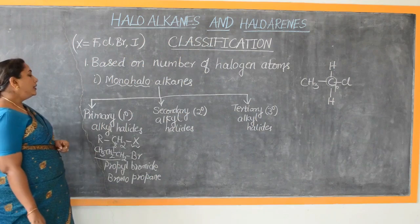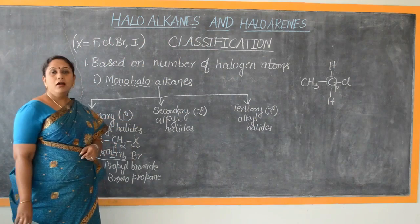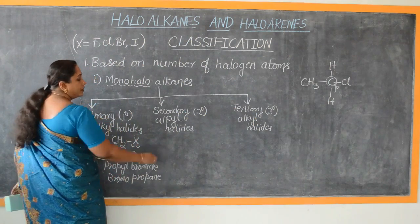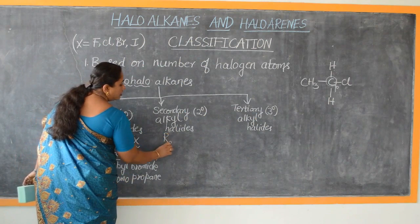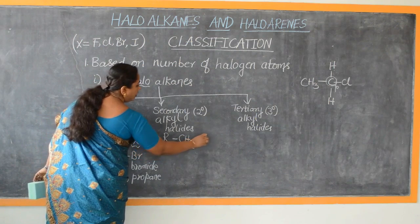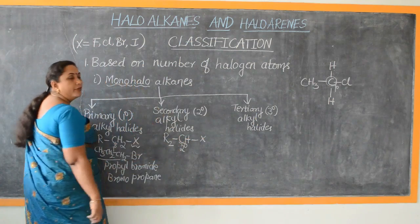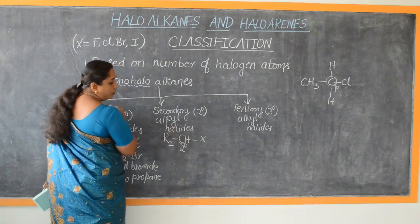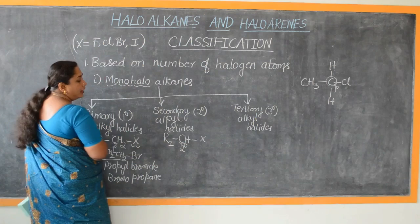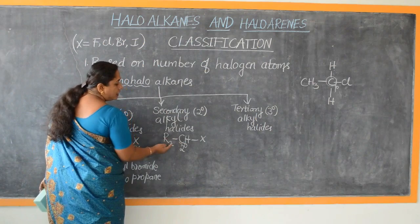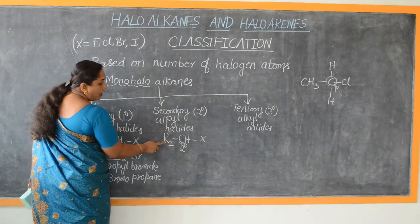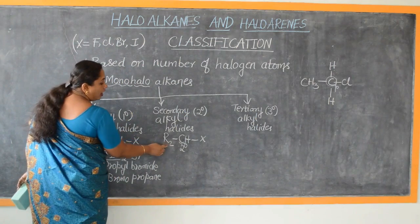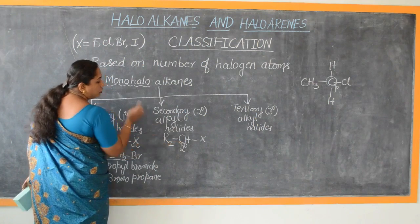Now let us understand secondary alkyl halides or secondary haloalkanes. Here, the halogen atom is attached to a secondary carbon atom. The general representation is R2CH-X. This carbon atom is secondary. A secondary carbon atom is one that is attached to only one hydrogen, or alternatively, it is attached to two other carbon atoms.